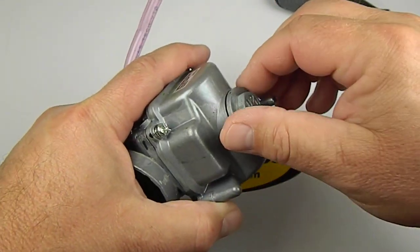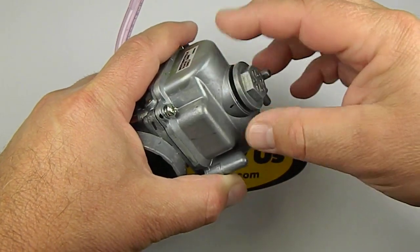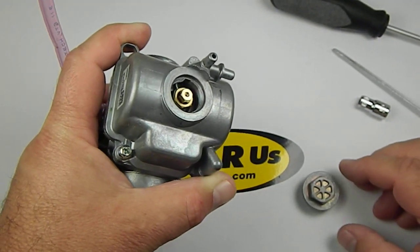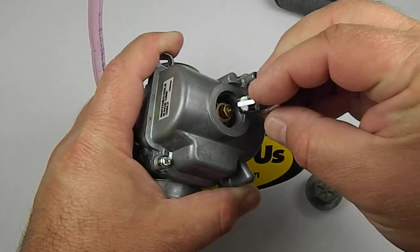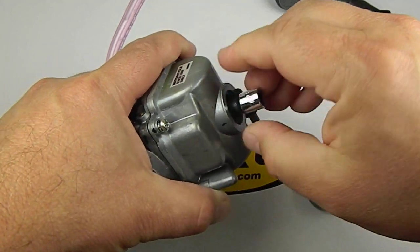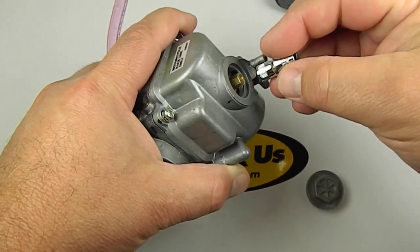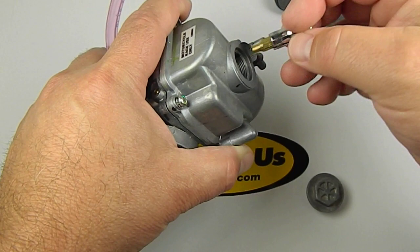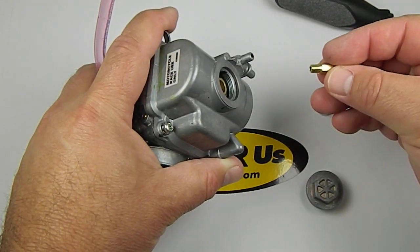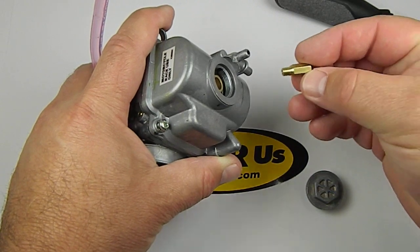If you're lucky enough to have this nut on the bottom of your bowl, it's great because you can get the main jet out really easily and you don't have to take the bowl cover off. Your main jet could be a hex style like this or round.